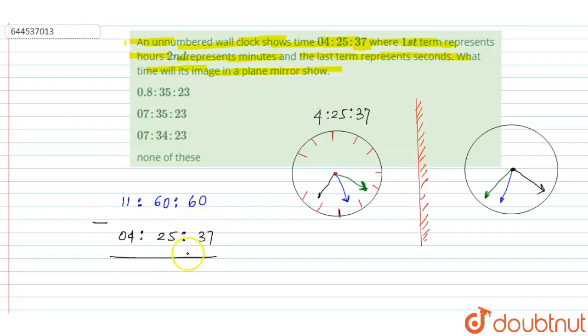And when we subtract, then this is equal to 23, 23 seconds, and this is equal to 5 and 3, that means 35 minute, and this is equal to 11 minus 4 and this is 7.